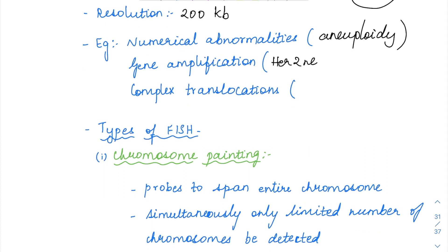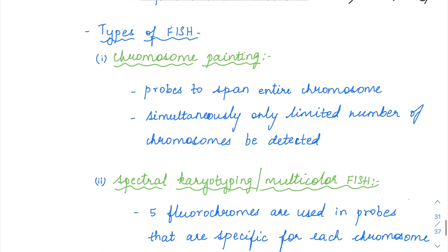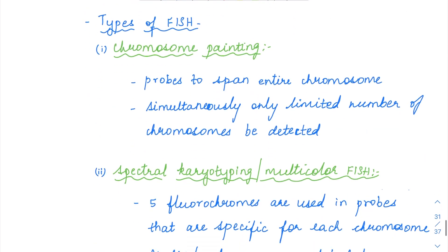FISH can also be used for gene amplification, like HER2/neu amplification in breast cancers. Then you can use FISH for complex translocations — for example, translocation 9;22 which is the BCR-ABL fusion in CML. So any translocation can be detected with FISH.